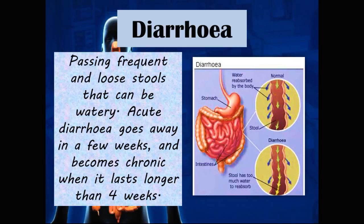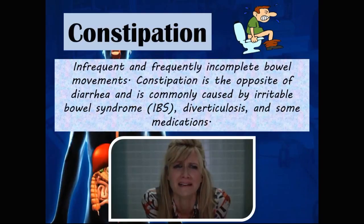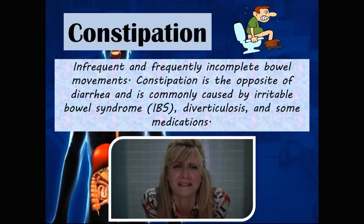Diarrhea is the passing of frequent and loose stools that can be watery. Acute diarrhea goes away in a few weeks, and it becomes chronic when it lasts longer than four weeks. Constipation is infrequent and frequently incomplete bowel movements — the opposite of diarrhea — and is commonly caused by irritable bowel syndrome, diverticulosis, and some medications.